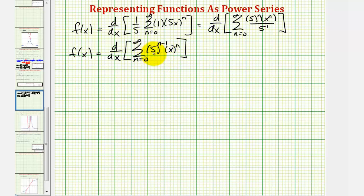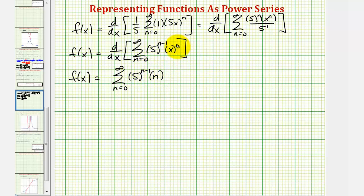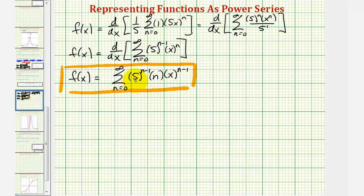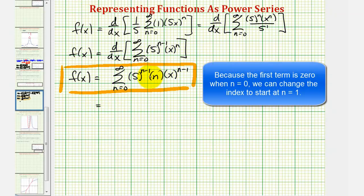Now we find the derivative of the power series with respect to x, giving f(x) equals the summation from n = 0 to infinity of 5^(n-1) times n times x^(n-1). This is the power series for our function. Notice when n = 0, the first term is zero because of the factor of n.